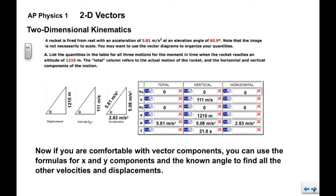Now, if you're comfortable with vector components and you're comfortable with the use of the formulas for x and y components, you can use the formulas and the known angle 60.9 to find all the other legs of this triangle including the hypotenuse and this triangle. So, if you're comfortable using the formulas, you can use the component formulas to effectively do the rest of the problem.